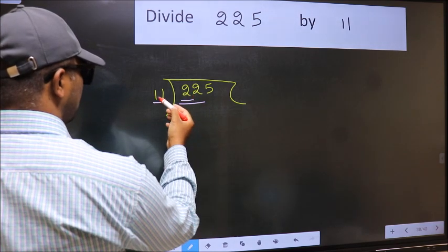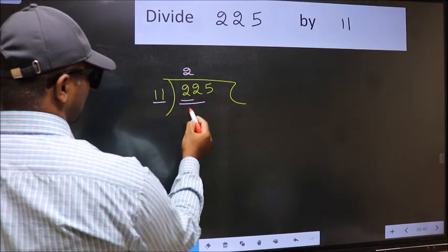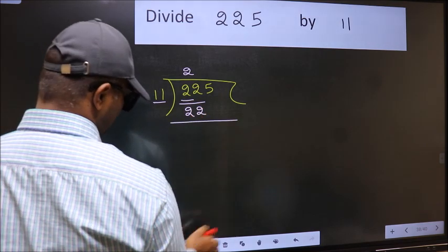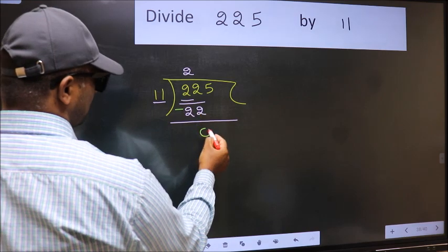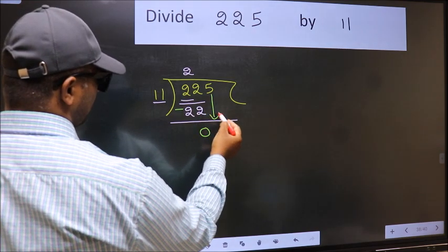When do we get 22 in 11 table? 11 times 2 is 22. Now we should subtract. 22 minus 22 is 0. After this, bring down the beside number.